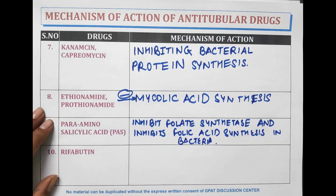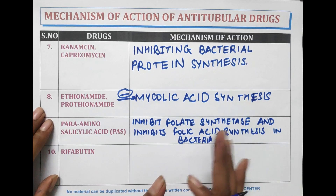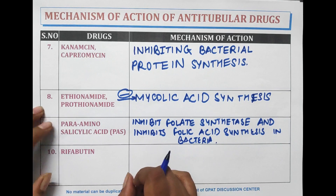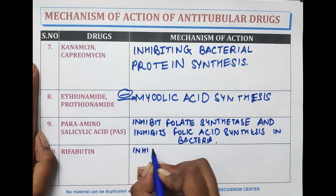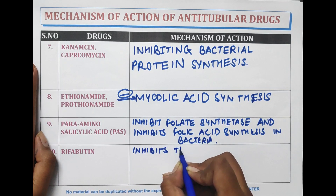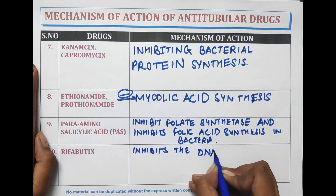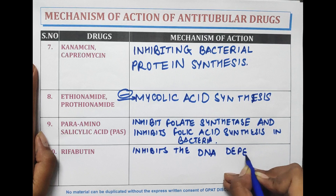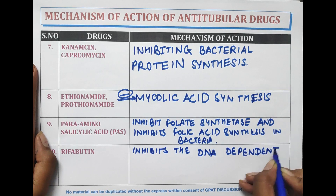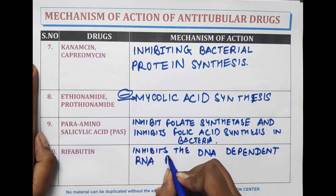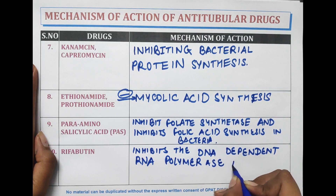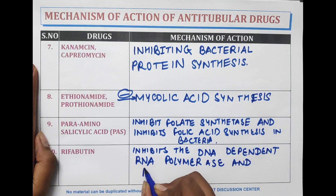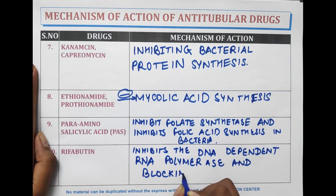Rifabutin inhibits DNA-dependent RNA polymerase, blocking its polymerization function, similar to rifampicin.